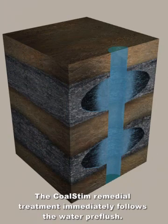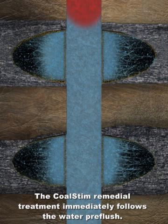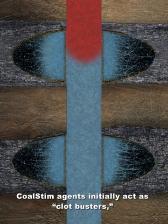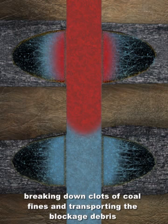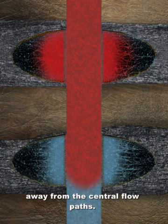The Coal Stim remedial treatment immediately follows the water pre-flush. Coal Stim agents initially act as clot busters, breaking down clots of coal fines and transporting the blockage debris away from the central flow paths.